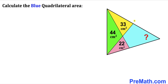Welcome to pre-math. In this video we have got a big triangle that consists of three smaller triangles as well as a blue quadrilateral. The area of the green triangle is 44 cm², the area of the yellow triangle is 33 cm², and the area of the pink triangle is 22 cm². Now we are going to calculate the area of the blue quadrilateral.